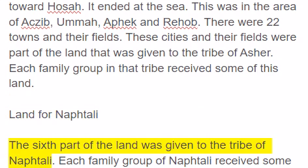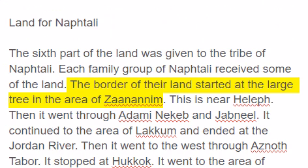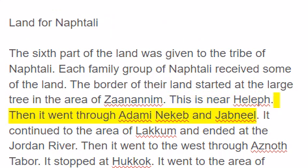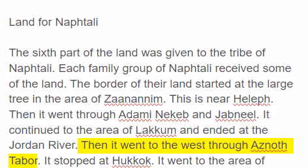Land for Naphtali. The sixth part of the land was given to the tribe of Naphtali. Each family group of Naphtali received some of the land. The border of their land started at the large tree in the area of Zananim. This is near Halaf. Then it went through Adami-Nakeb and Jab-Neil. It continued to the area of Lakum and ended at the Jordan River.